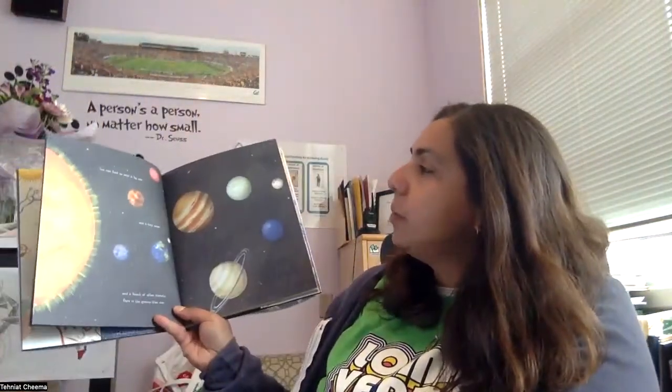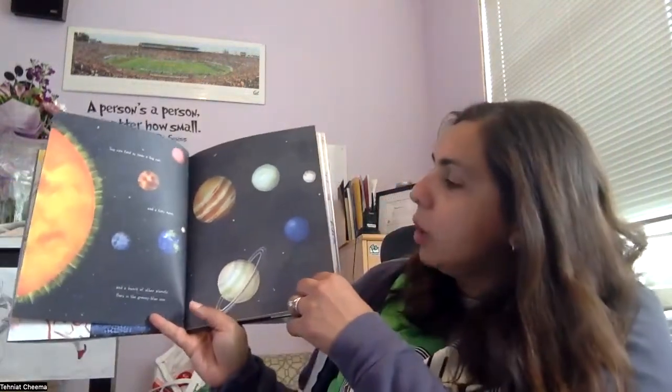Dear visitor from outer space, because who among us hasn't written a letter to an alien? Dear visitor from outer space, if you come to Earth, here's what you need to know. You can find us near a big sun and a tiny moon and a bunch of other planets. Ours is the greeny blue one.